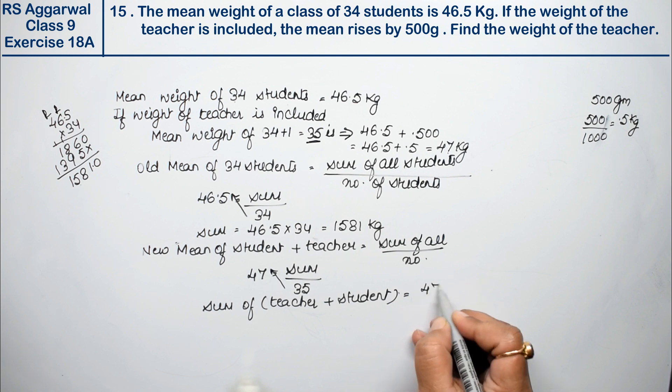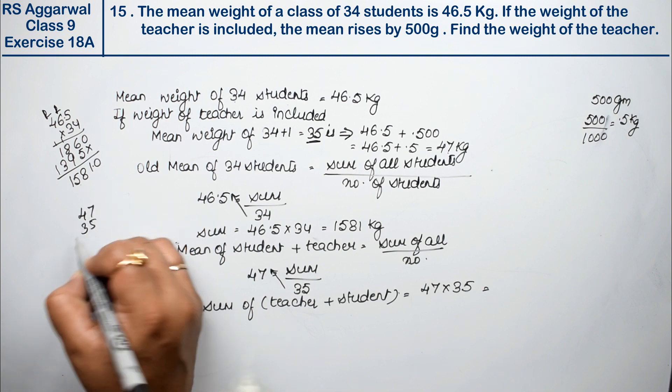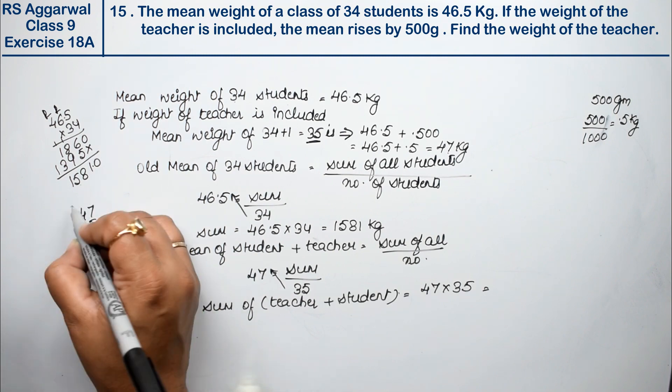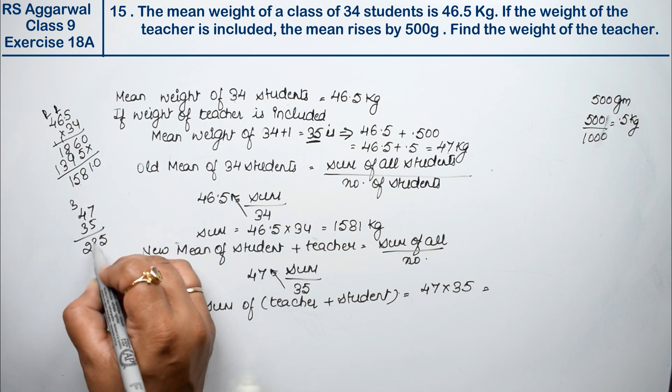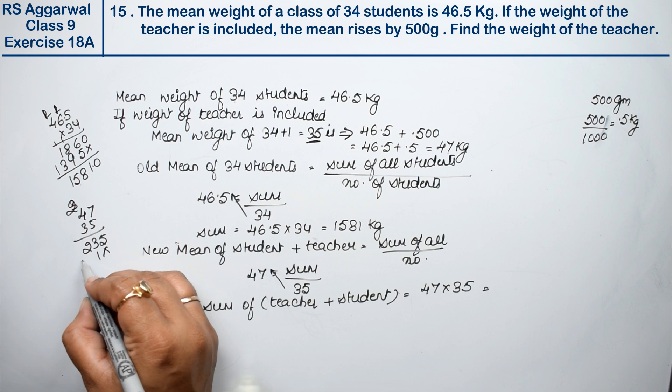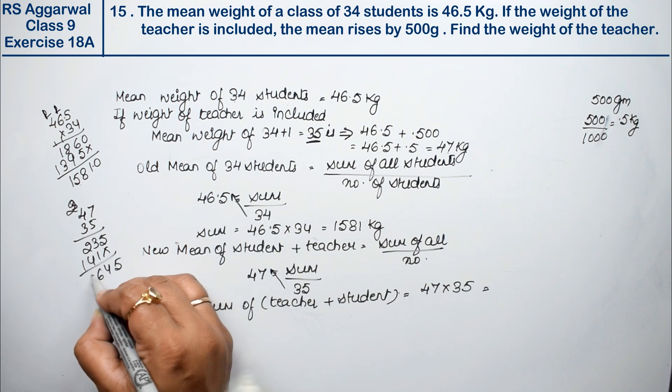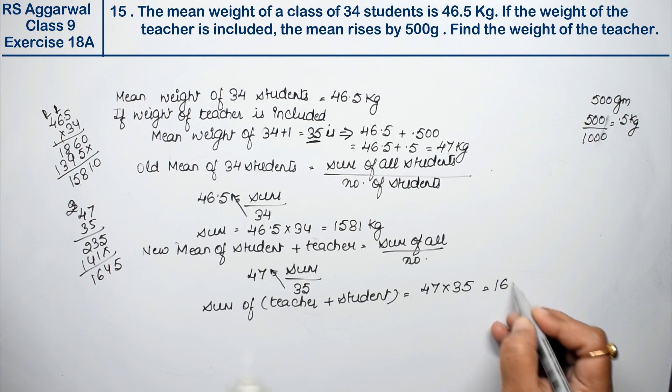Right? It was in divide here, coming here it becomes multiply. 47 multiplied by 35, that is, let's do it here, multiply by 35. [Performs multiplication: 5×7=35, 3×7=21+3=24; 4×3=12+1=13, +14] So this gives 1,645 kg. Right?